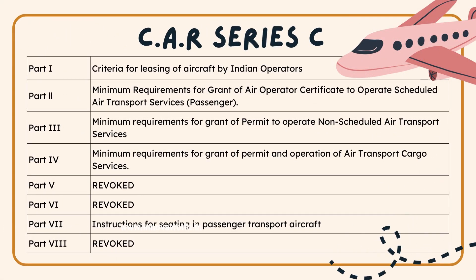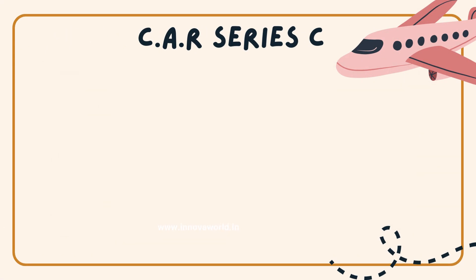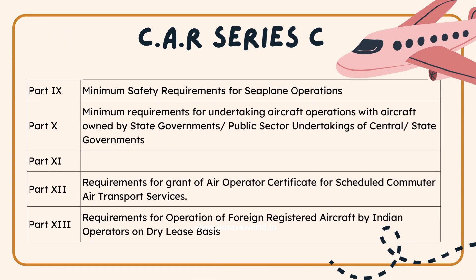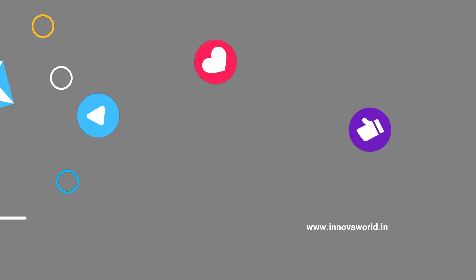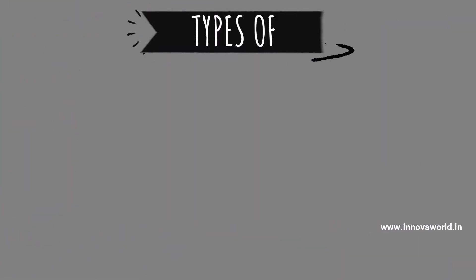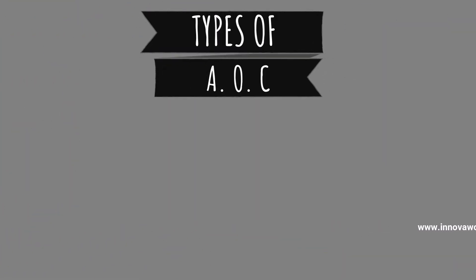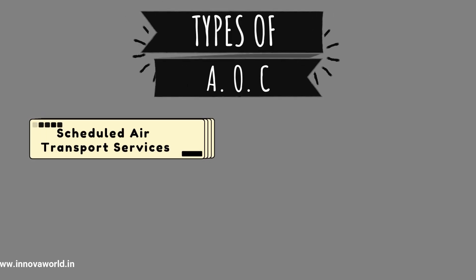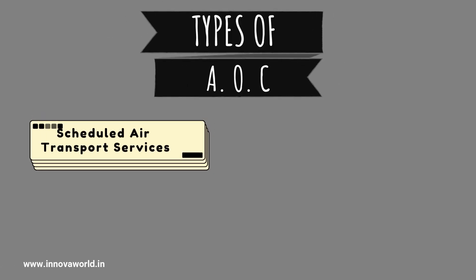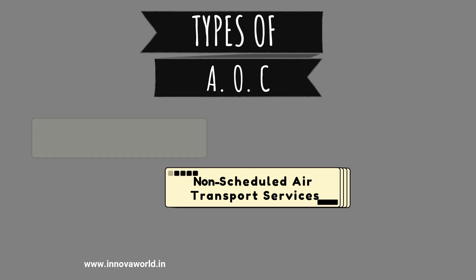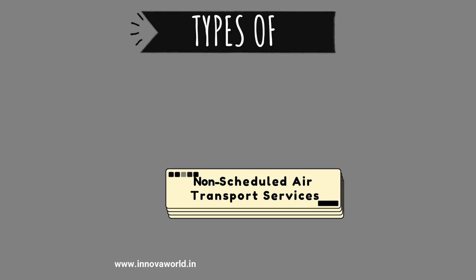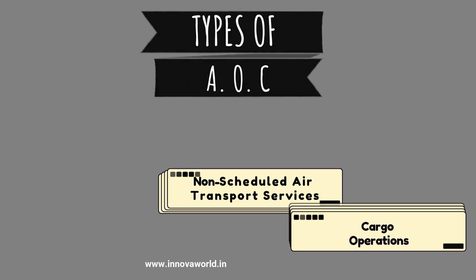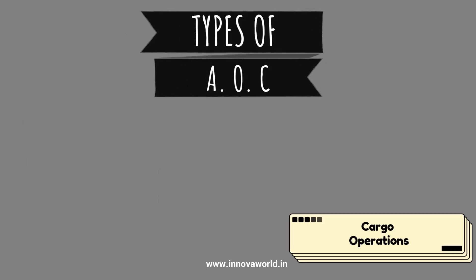Before starting with the various parts, let's understand the types of Air Operator Certificates. Air Operator Certificates can be classified into three types: Scheduled Air Transportation Services, Non-Scheduled Air Transportation Services, and Cargo Operations.